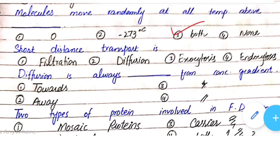Short distance transport is: option one - filtration, option two - diffusion, option three - exocytosis, option four - endocytosis. Basically, short distance transport is diffusion, so option two is correct.